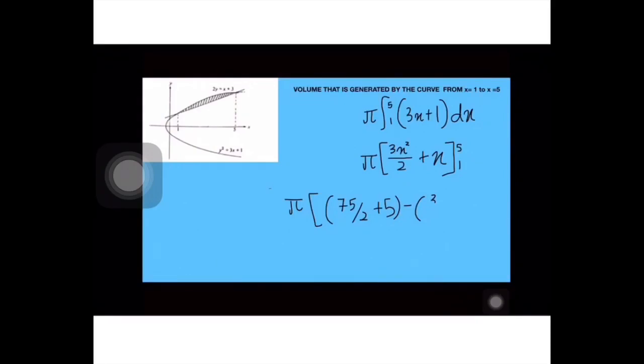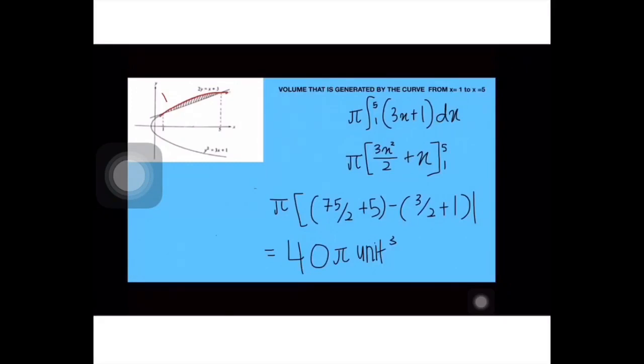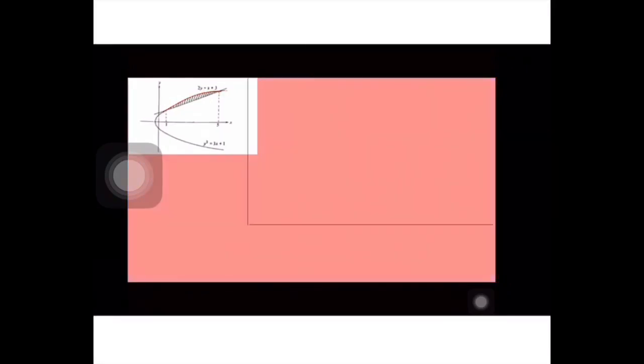Lepas tu kita integrate macam biasa. 3X tu jadi 3X square per 2 tambah X. Lepas tu kita masukkan nilai 5 dan 1. Masukkan nilai 5 dahulu dapat 75 per 2 tambah 5, tolak dengan masuk nilai 1 tu dapat 3 per 2 tambah 1. Selesaikan dapat 40 pi unit cube.